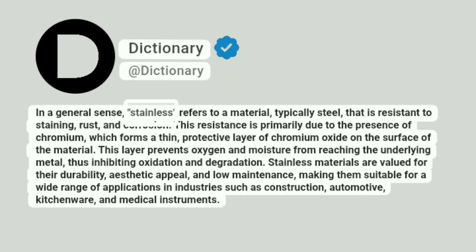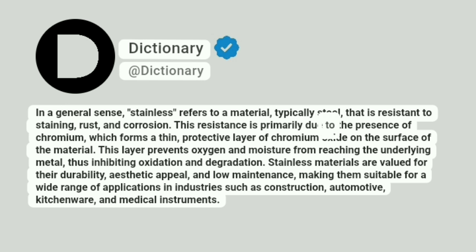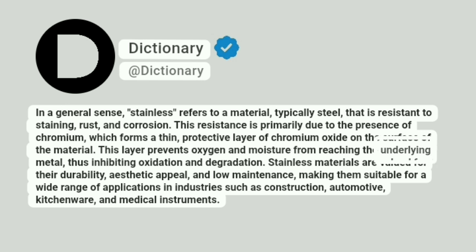In a general sense, stainless refers to a material, typically steel, that is resistant to staining, rust, and corrosion. This resistance is primarily due to the presence of chromium, which forms a thin, protective layer of chromium oxide on the surface of the material. This layer prevents oxygen and moisture from reaching the underlying metal, thus inhibiting oxidation and degradation.